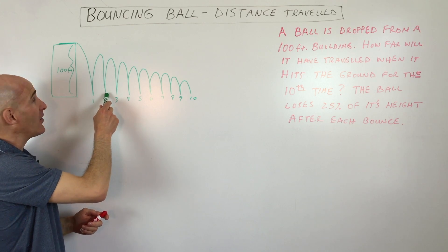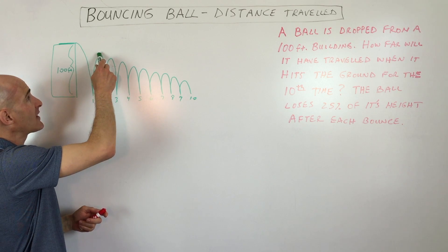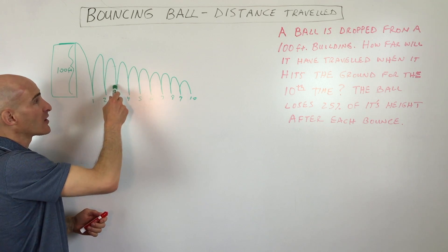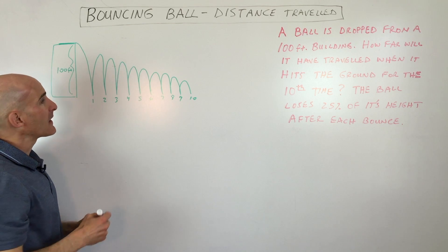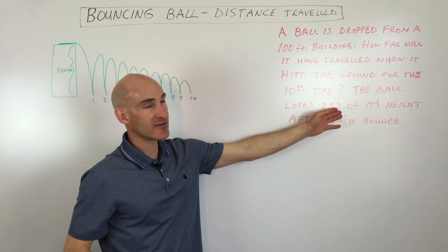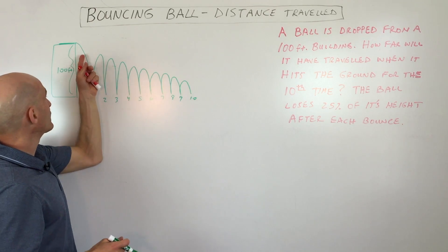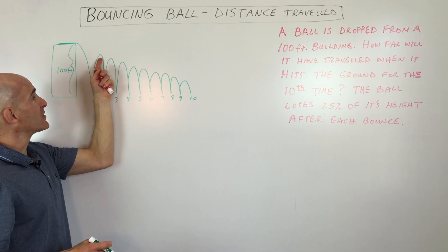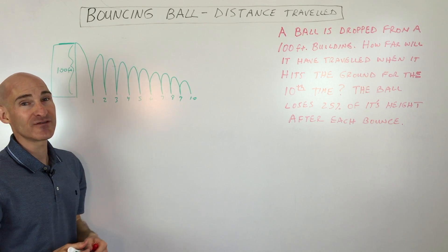You're dropping the ball and then notice what happens. It goes up and then it comes back down. So what's happening is it's traveling up, it's traveling back down. Same thing on the next bounce. It's going up and down. So even though it's losing 25% of its height, for example, when you drop it the first time, that's 100, then it's only going up 75 feet, but it's also traveling down 75 feet as well.